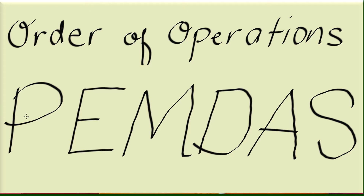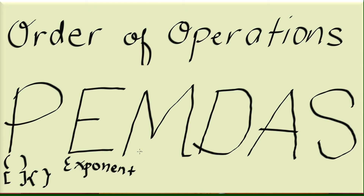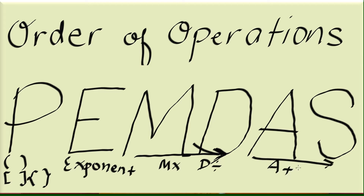We have this acronym PEMDAS in which P stands for parenthesis — which could be the typical parenthesis symbol, or sometimes brackets or braces. So any of these three grouping symbols can be represented by P. E means exponent, and then MD from left to right is multiplication and division. Same with addition and subtraction — if they are on the same level, we do left to right.